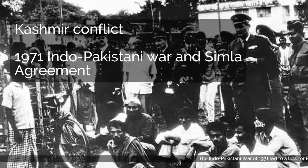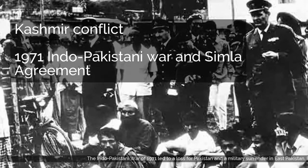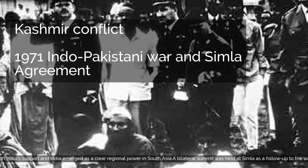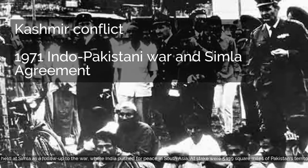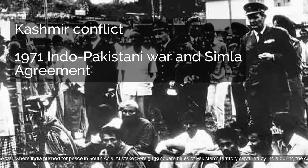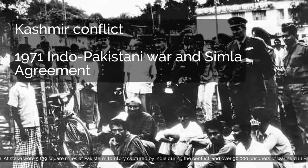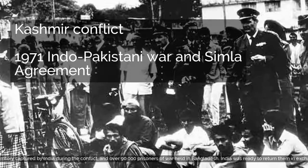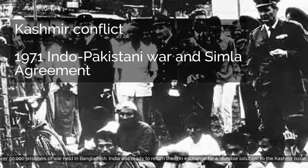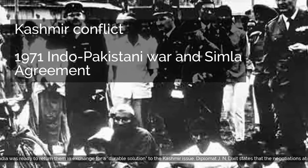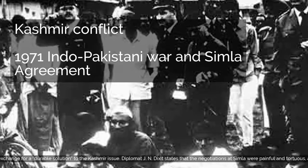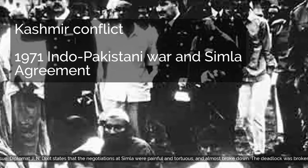The Indo-Pakistani War of 1971 led to a loss for Pakistan and a military surrender in East Pakistan. Bangladesh was created as a separate state with India's support, and India emerged as a clear regional power in South Asia. A bilateral summit was held at Simla as a follow-up to the war. At stake were 5,139 square miles of Pakistan's territory captured by India during the conflict, and over 90,000 prisoners of war held in Bangladesh. India was ready to return them in exchange for a durable solution to the Kashmir issue. Diplomat J.N. Dixit states that the negotiations at Simla were painful and tortuous and almost broke down.